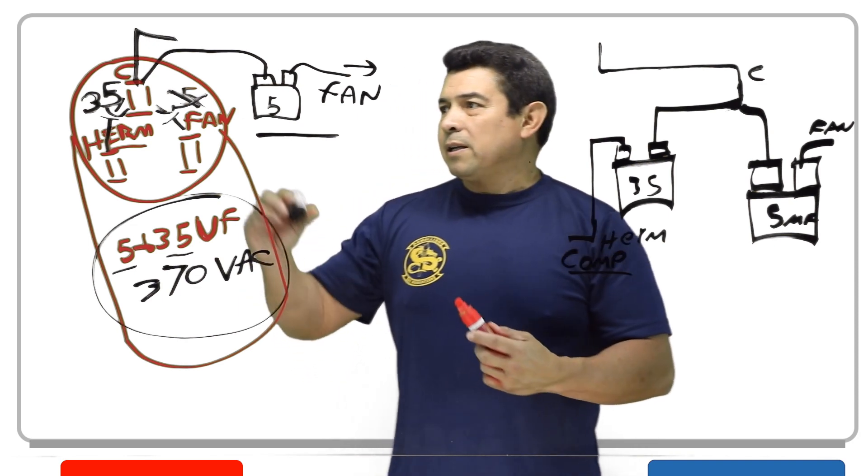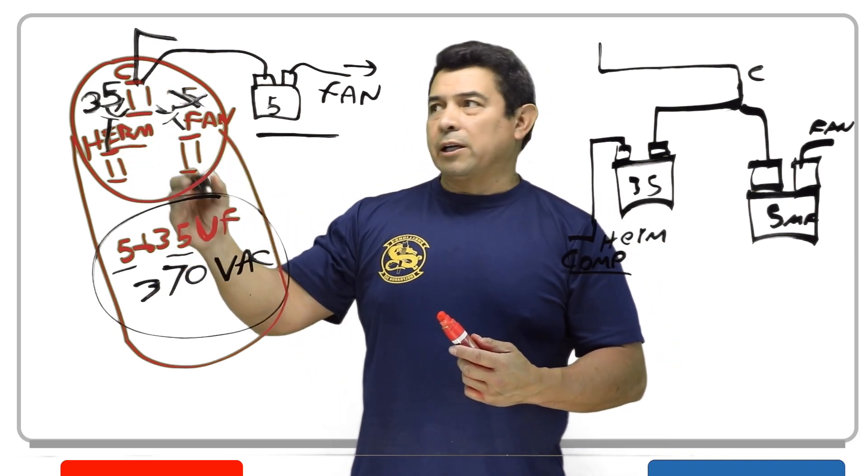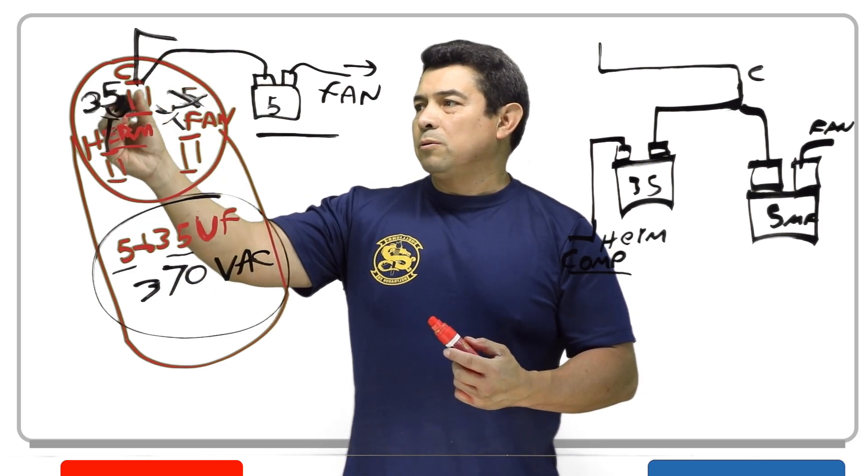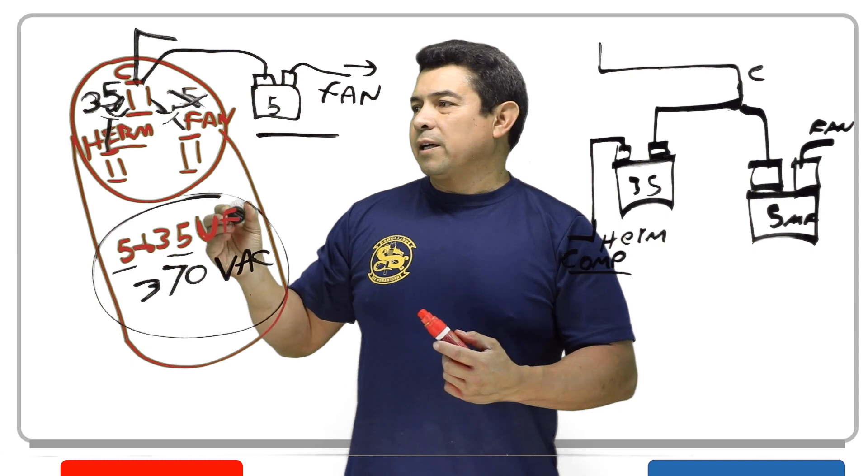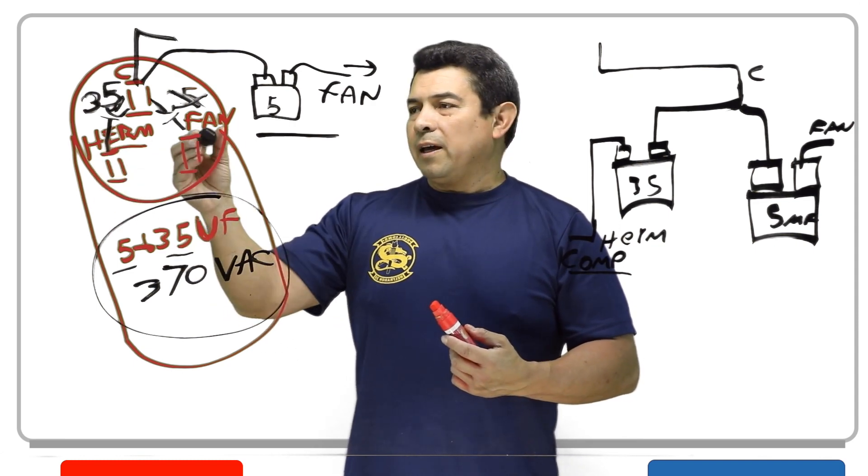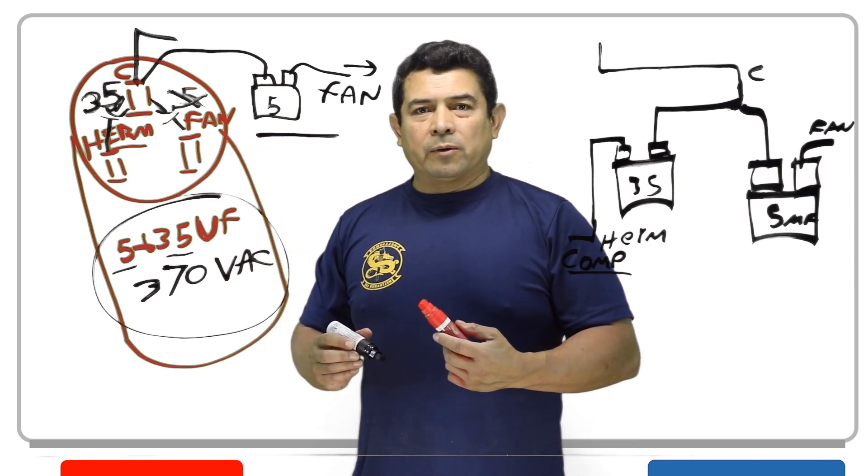So, hopefully this explains about the capacitors that have the three connections. The common, the herm, and the fan. Common, because that's feeding the two capacitors that are inside. Herm, because that goes to the hermetic compressor. And then fan, because that goes to the condenser fan motor.